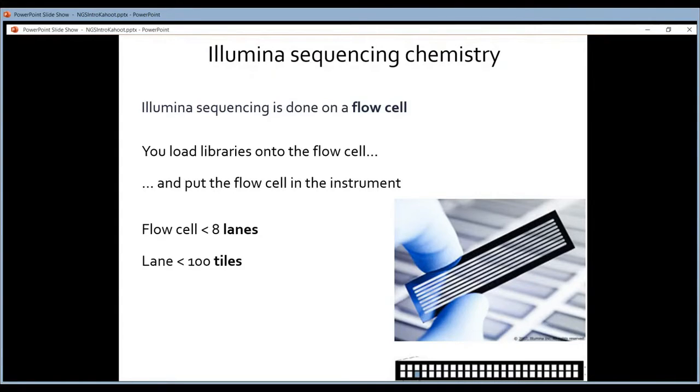This iron grid divides the flowcell into lanes. Each of these transparent lines forms a lane on your flowcell. In this example, you have a flowcell containing 8 lanes. But how many lanes there are depends on the sequencer—sometimes it's 2, sometimes 4, sometimes 8.